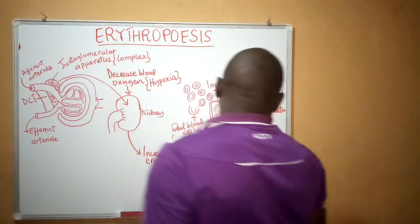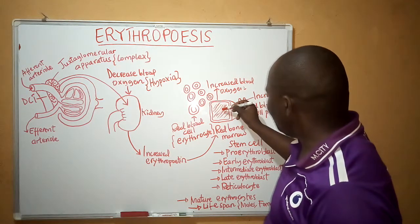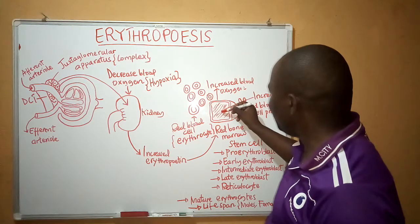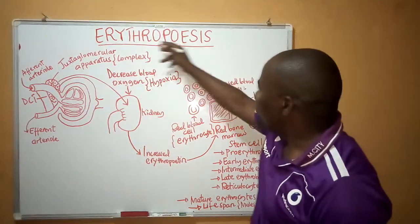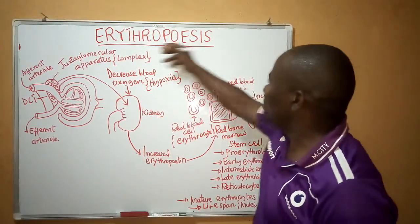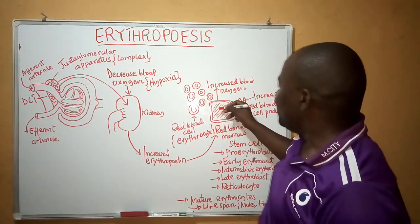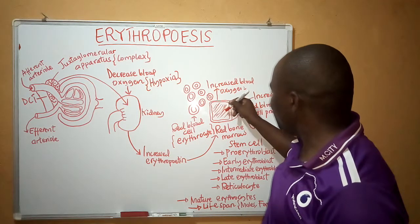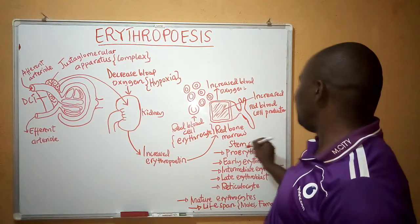Erythropoietin is transported through blood circulation up to the central portion of the bone — the red bone marrow. The central portion of the bone is where the process of erythropoiesis, the process of manufacturing or producing red blood cells, is going to take place.